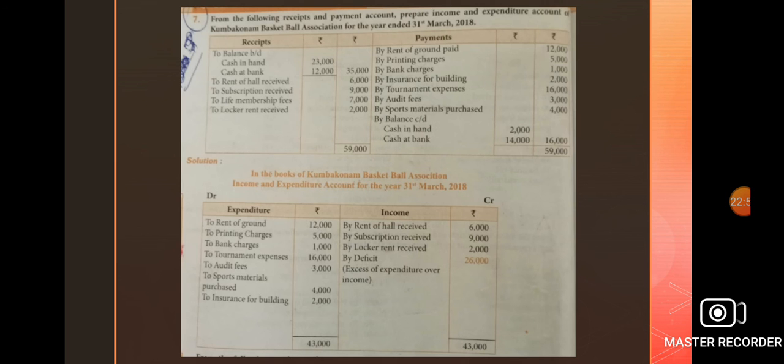Debit side value 43,000 minus income side value 17,000 gives rupees 26,000. This value is known as deficit. Deficit means excess of expenditures over income.